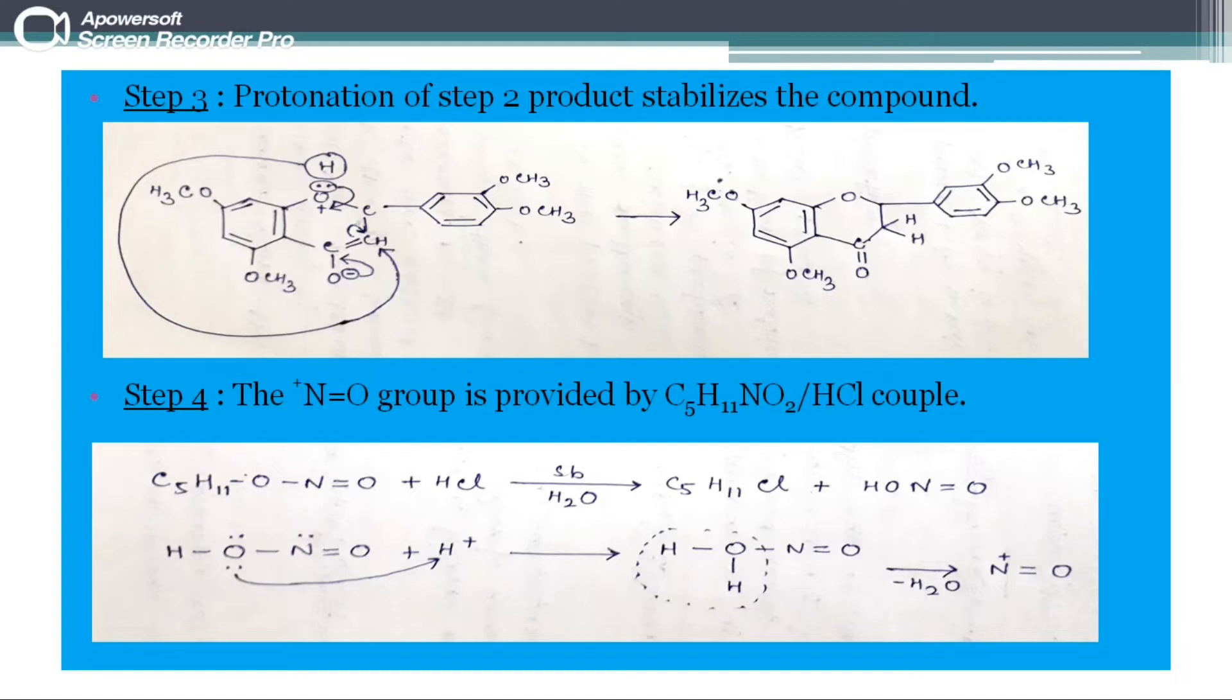The couple C5H11NO2, i.e. 1-nitropentane and hydrochloric acid, provide NO plus group to the product of step 3.